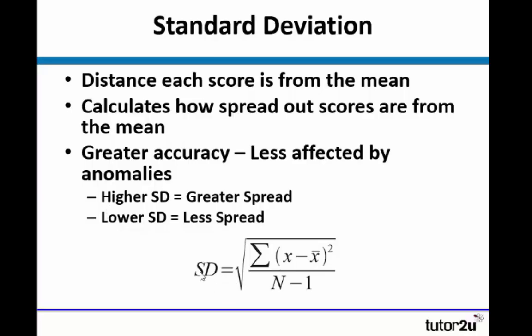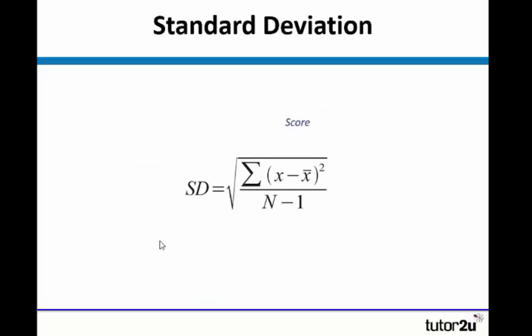This is the formula for standard deviation. And we're just going to break this down now. In terms of standard deviation, X is representing the score. The X with the line above it represents the mean. Obviously, the little 2 floating there is squared.